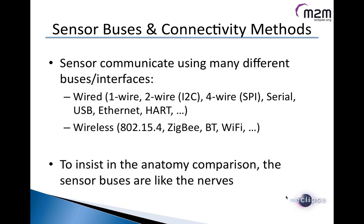Sensors basically communicate using many different buses or interfaces. We find wired sensors using very simple one-wire interfaces, or two-wire and four-wire interfaces. The majority of sensors use serial port. We're starting to see USB sensors, Ethernet sensors, and HART sensors in the oil and gas industry. There are also sensors communicating using wireless protocols — one of the most popular being ZigBee, built on top of 802.15.4. Of course we also find Bluetooth sensors, Wi-Fi sensors, and many other proprietary protocols. To continue the anatomy comparison, the sensor buses are like the nerves.